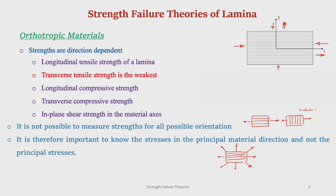So how do we specify the strength of a lamina? It is therefore important to know the stresses in the principal material direction. As we have already defined, directions 1 and 2 — where 1 is parallel to the fiber (longitudinal direction) and 2 is perpendicular to the fiber (transverse direction) — are the principal material directions, which we discussed in our last module. Therefore, it is important that we know the stresses in the principal material direction, because in the principal material direction we may specify the strength.